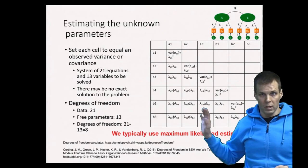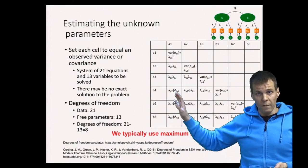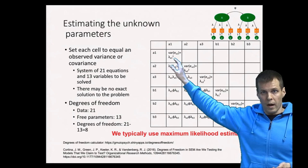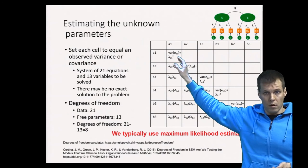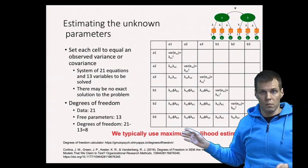For this particular model, the idea is that we find the model parameters so that the implied correlations are as close to the observed correlations as possible.